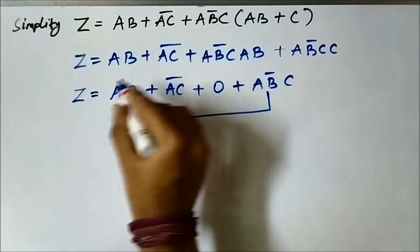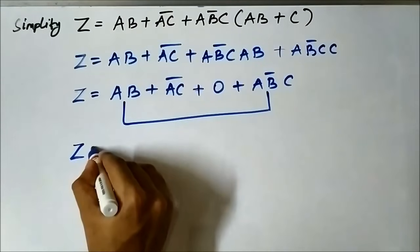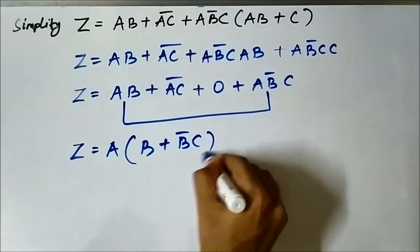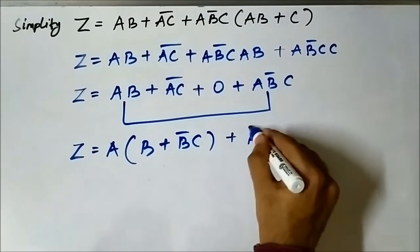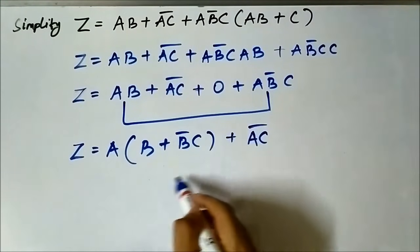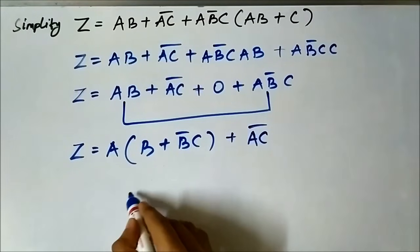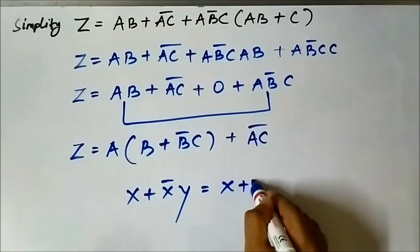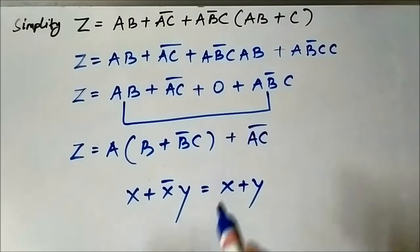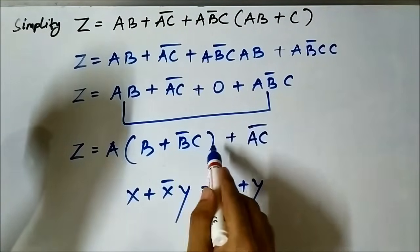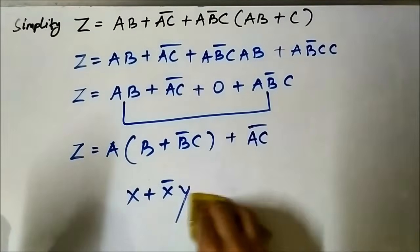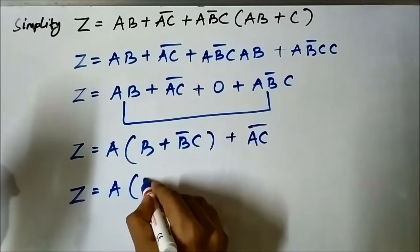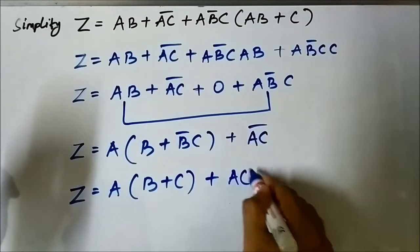Factoring out a: z = a·(b + b̄·c) + (a·c)̄. Again the absorption rule applies: x + x̄·y = x + y. So b + b̄·c simplifies to b + c. The expression becomes z = a·(b + c) + (a·c)̄. Opening the bracket: z = a·b + a·c + (a·c)̄.